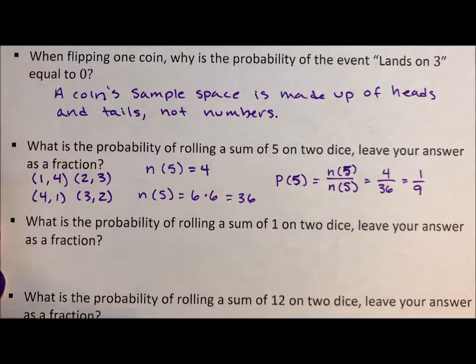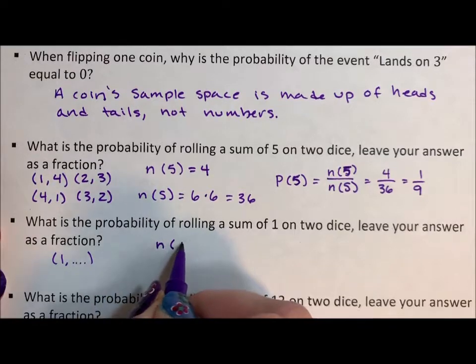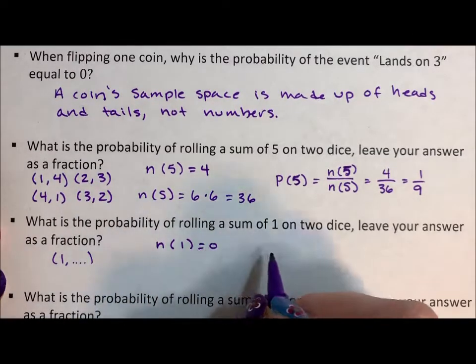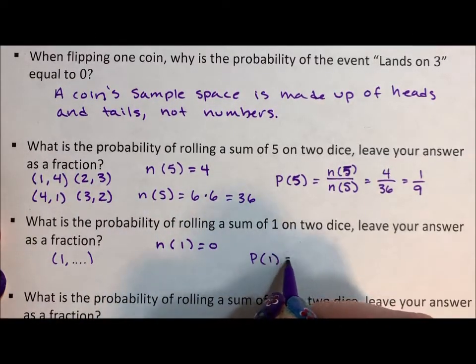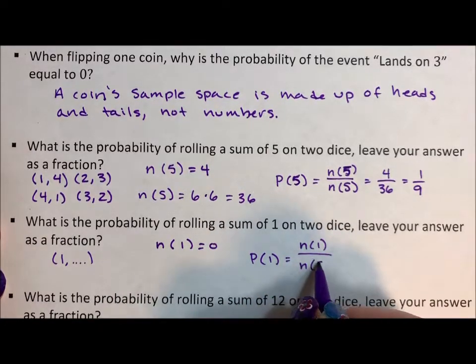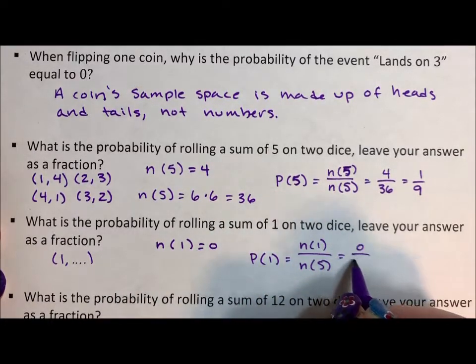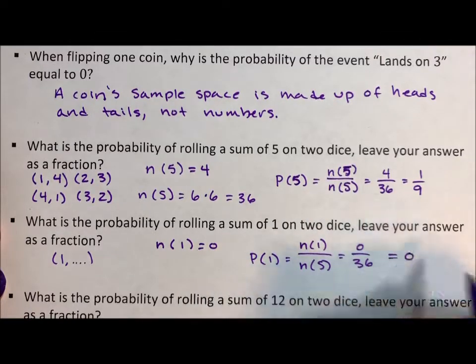What's the probability of rolling a one? Well, that's not possible. The smallest sum is two. So the number of elements for rolling a one is zero. The probability of rolling a one is the number of elements that are one over the number of elements in the sample space, which is zero over 36, which we will say is zero. You never leave a zero in a fraction, you always bring it down to just zero.